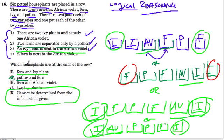And we have that. And we know that a fern is next to the African violet, right? And in each of these cases, we also have that: fern, African violet, fern, African violet, and so forth. So this problem doesn't tell us enough. We also need to know the location of this other ivy plant, which is being moved around each time.